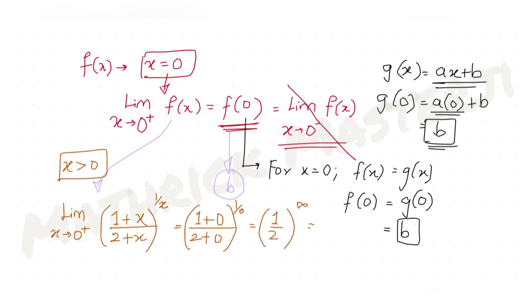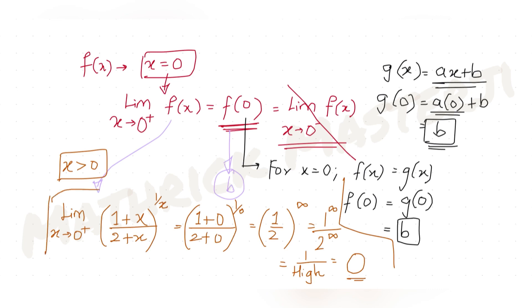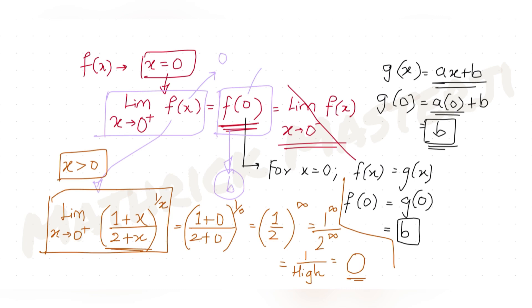That gives 1 raised to infinity divided by 2 raised to infinity. Since 1 to any power is 1, and 2 raised to infinity is very large, 1 divided by a very large value equals 0. So the right-hand limit is 0. Since f is continuous at x = 0, we equate: b = 0.